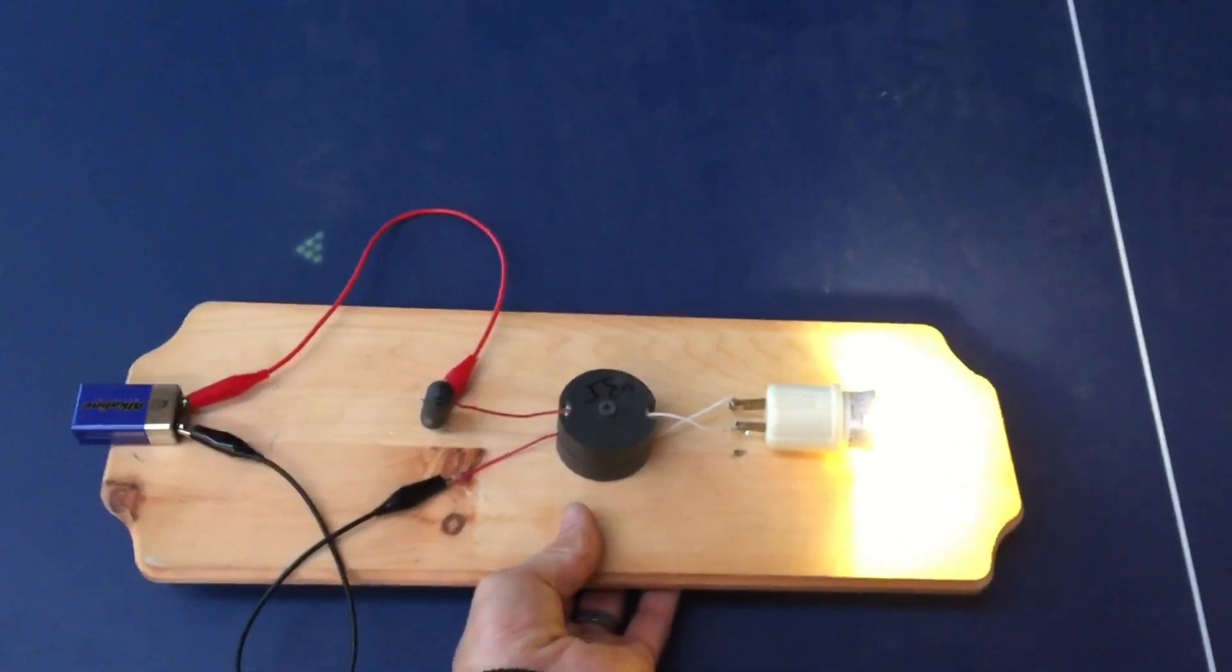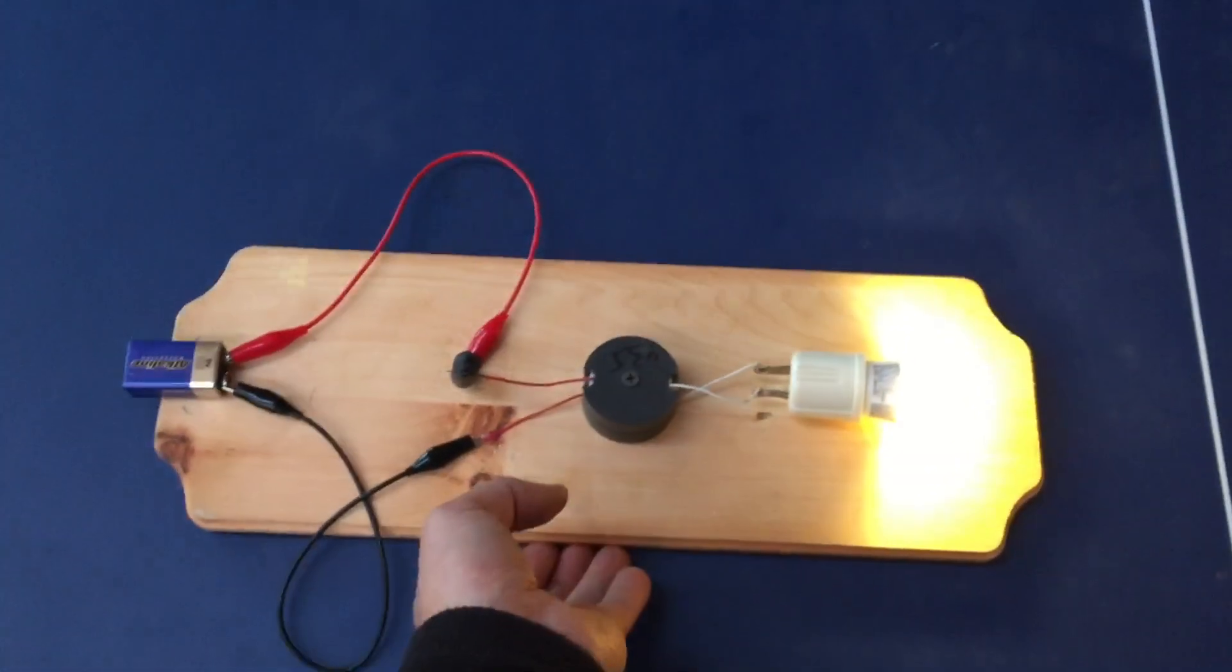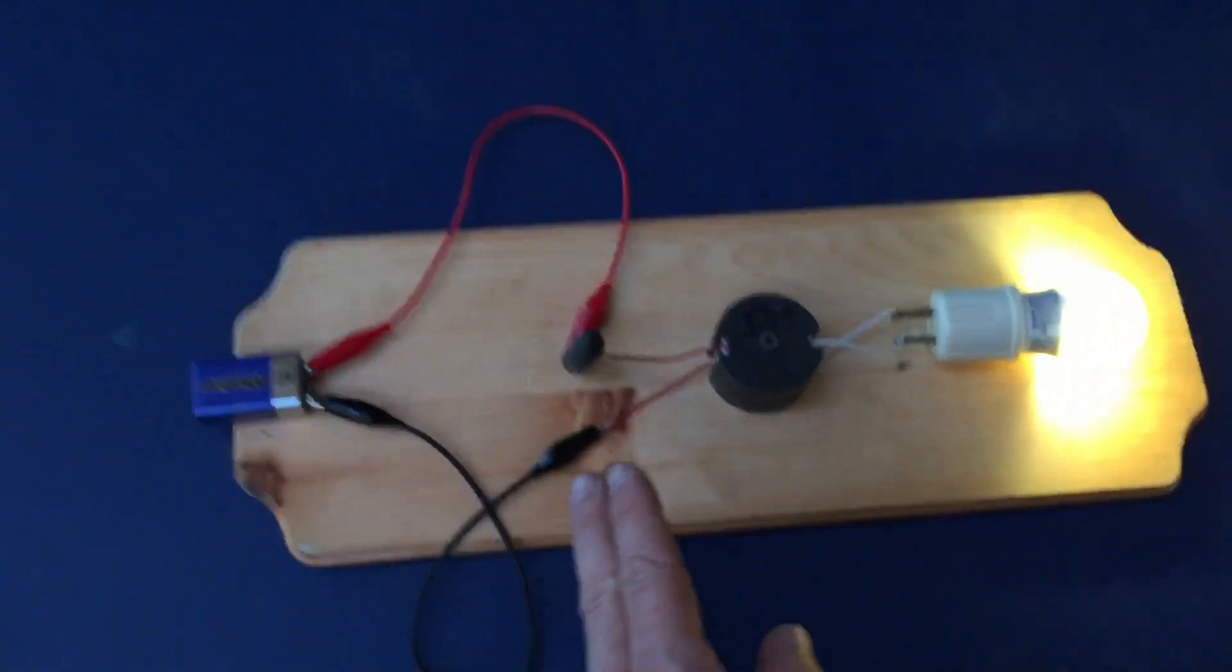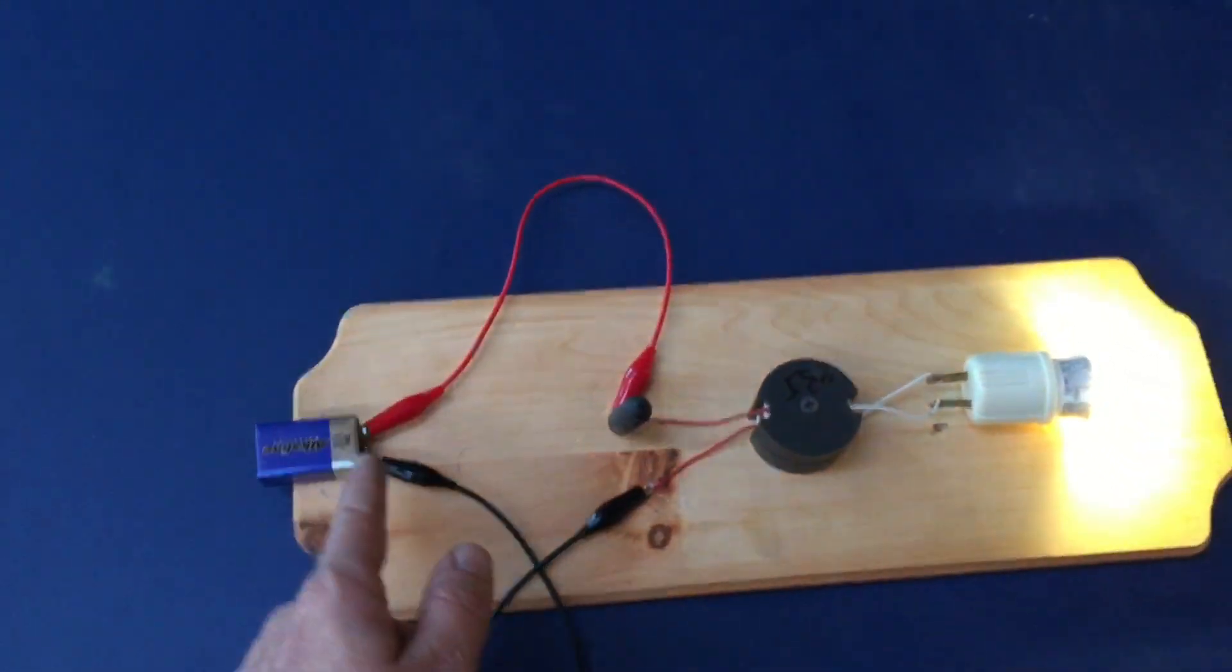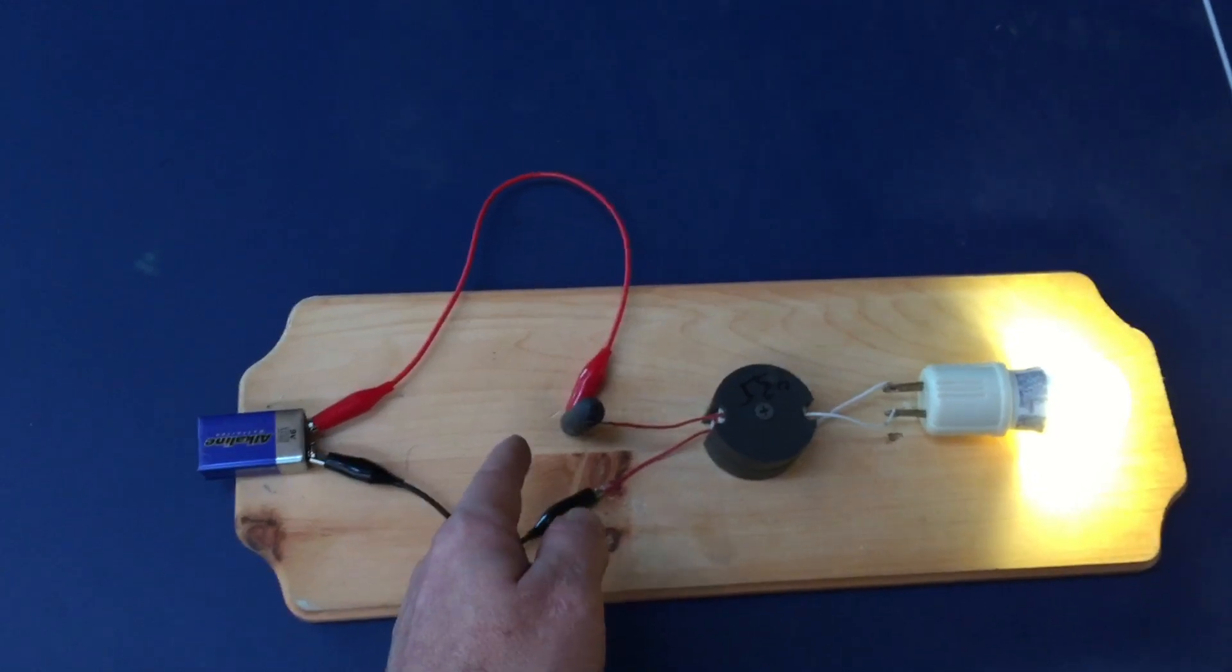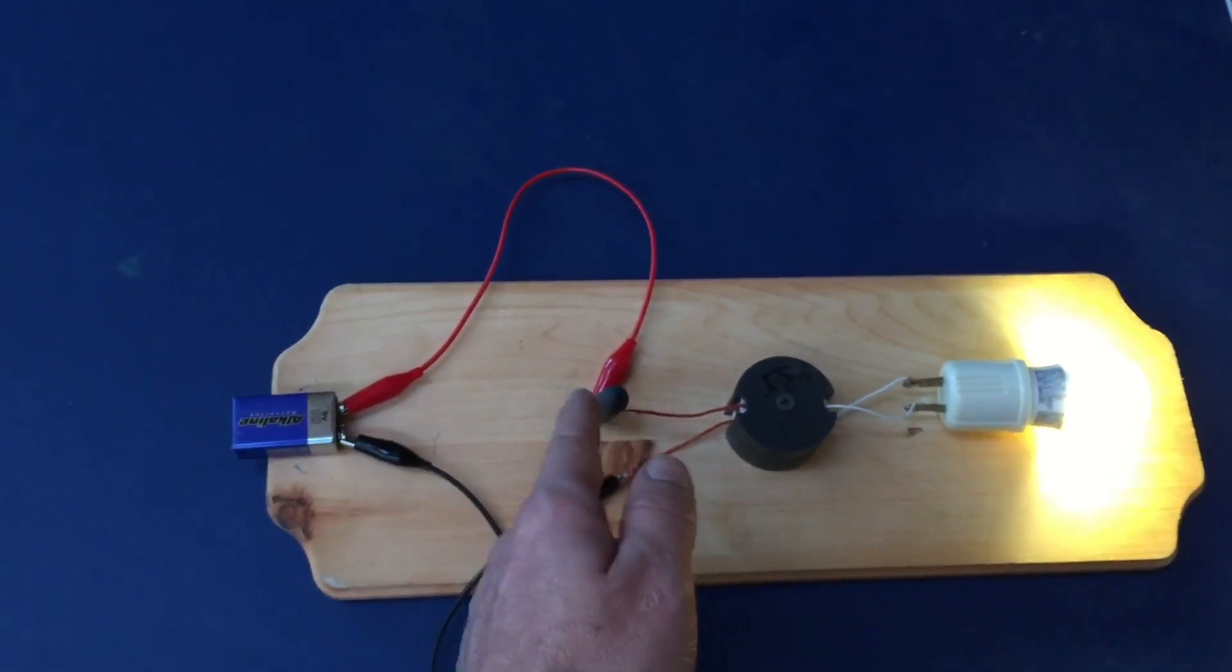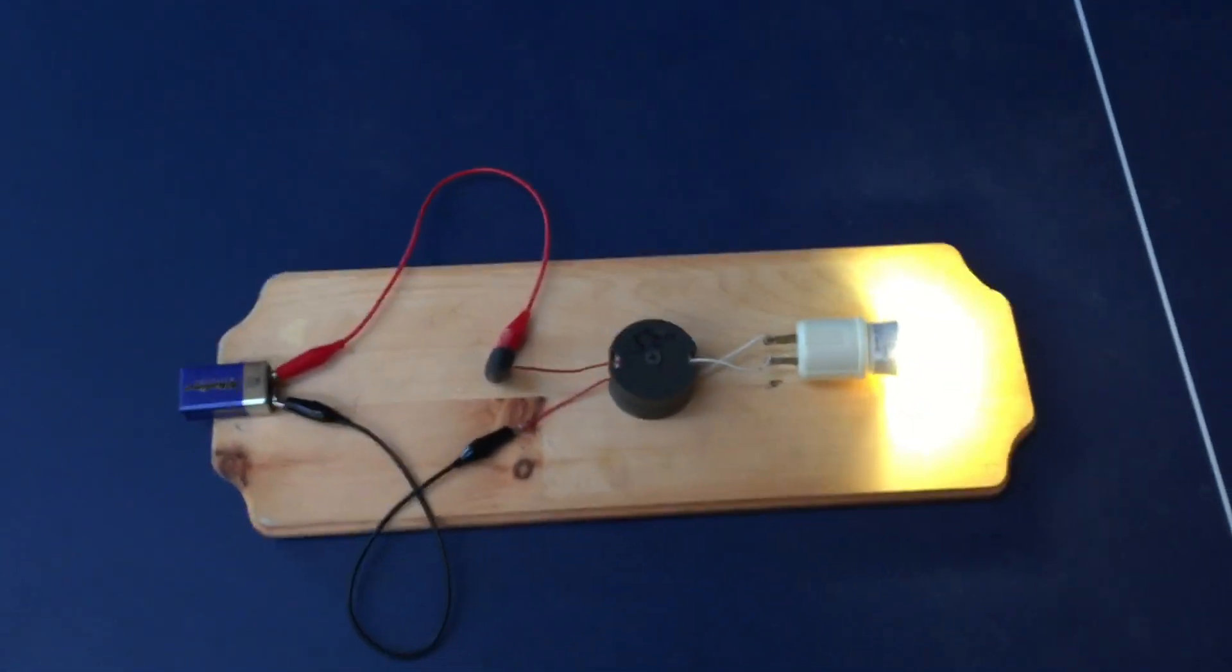I'm sure some folks will ask for a schematic in the video description. Again, it's not really necessary. You got your primary, your secondary. Between your primary and one of the connections, you put a piece of carbon, lightly touch the copper wire to that. That's really all there is to it, folks. It's incredibly simple.